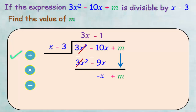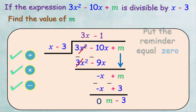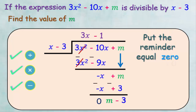We multiply negative 1 by x minus 3: negative 1 times x equals negative x, and negative 1 times negative 3 equals positive 3, giving negative x plus 3. Subtracting the two expressions gives m minus 3. Since the expressions are divisible, the remainder equals 0, so m minus 3 equals 0, which means m equals 3.